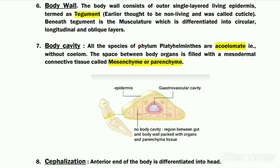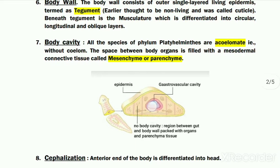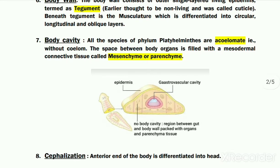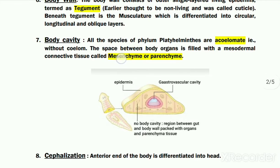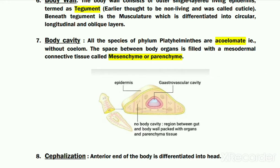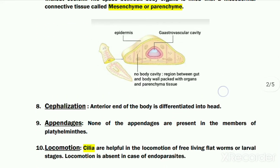The next is their body cavity. Flat worms are acoelomates, meaning they do not have any body cavity or coelom. The space present between the epidermis and the alimentary canal or gut, where the organs are present, is filled with a special mesodermally derived connective tissue referred to as mesenchyme or parenchyme. There is no cavity or coelom, so flat worms are acoelomate organisms.